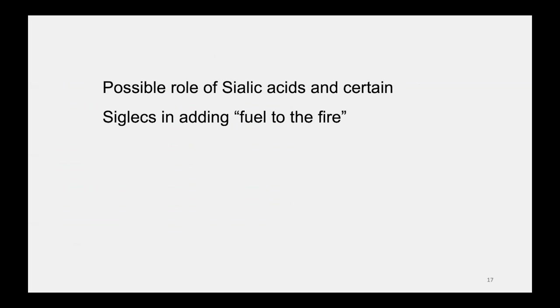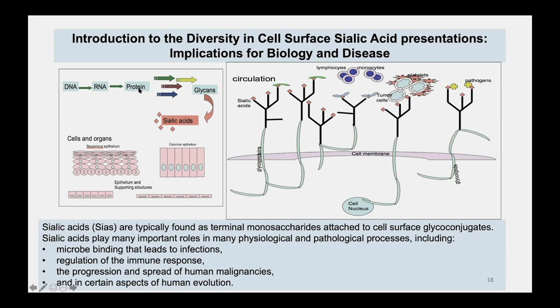Now, the possible roles of sialic acids and certain Siglecs in allowing these carcinomas to occur in humans. Everyone has heard about DNA making RNA making protein, but the cell is not done until the cell surface glycans are made. At the very tips of these glycans are diamond-shaped objects called sialic acids, found on the surfaces of every cell. These sialic acids are important in interacting with circulating lymphocytes, monocytes, platelets, tumor cells, and pathogens, influencing the progression of human malignancies, aspects of human evolution, immune response regulation, and microbe binding.